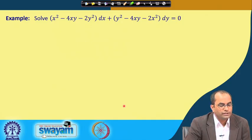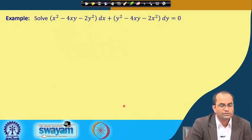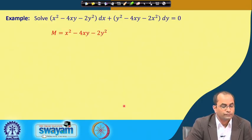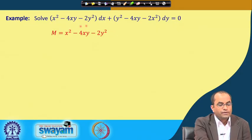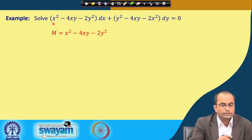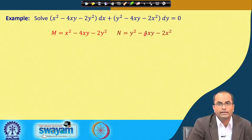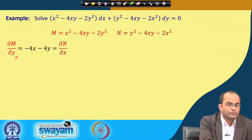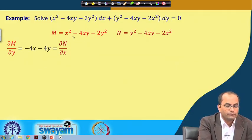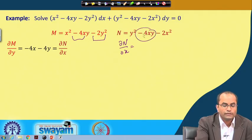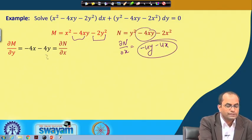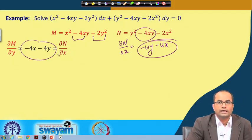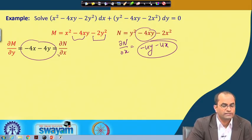Example: (x² − 4xy − 2y²) dx + (y² − 4xy − 2x²) dy = 0. Here M = x² − 4xy − 2y² and N = y² − 4xy − 2x². We check exactness by computing ∂M/∂y = −4x − 4y and ∂N/∂x = −4y − 4x.